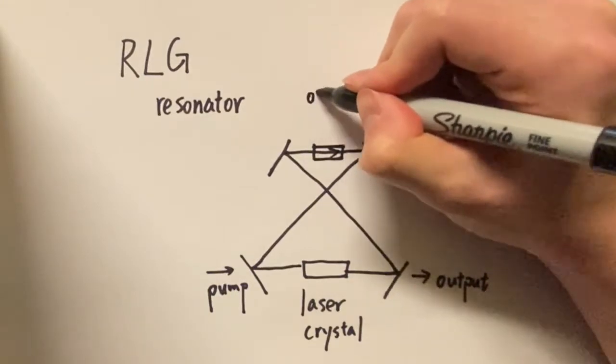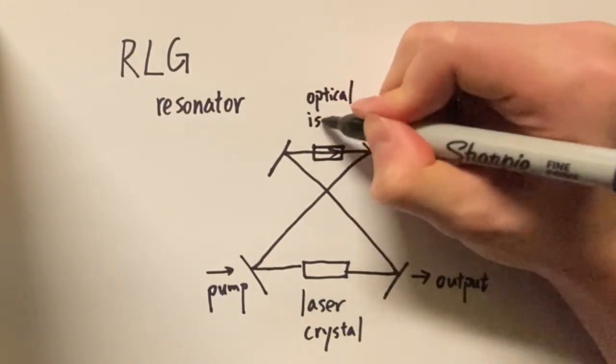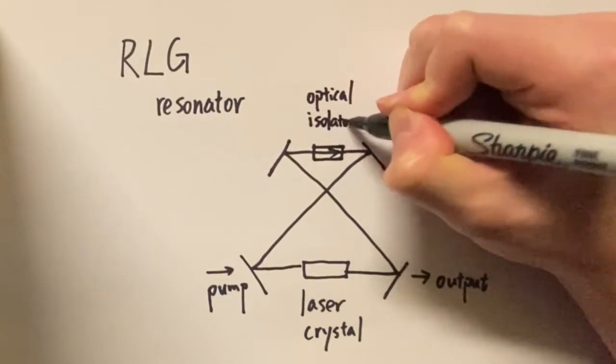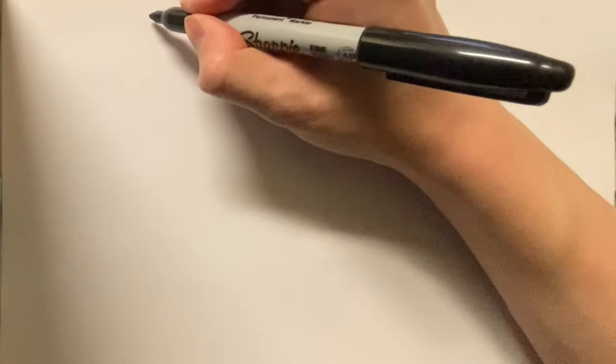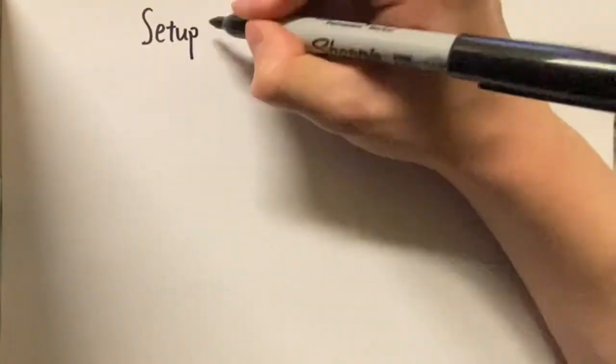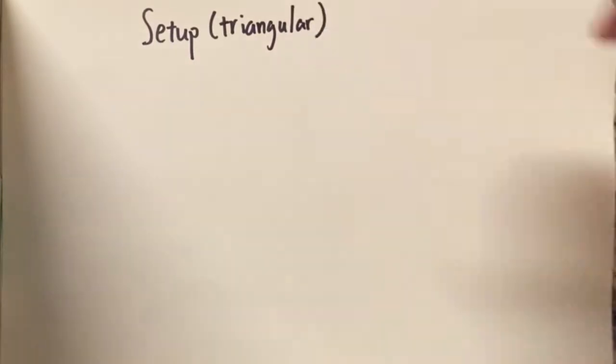If it is unidirectional, it will be easy to achieve single frequency operation with an optical isolator and there will be no standing wave interference pattern in the gain medium. However, this is not our focus today since bidirectional operation is required for ring laser gyroscope.